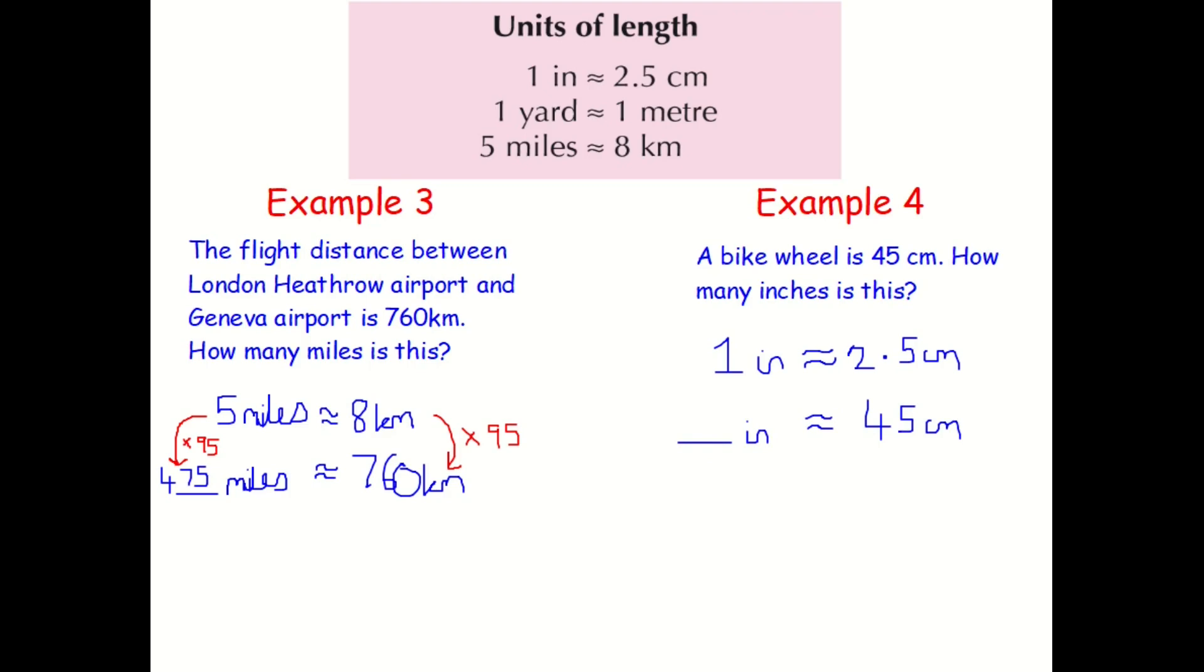So my question now becomes, how many two and a half centimetres are there in 45? Well, you can just do that by doing on your calculator, 45 divided by 2.5, which tells me that that is 18. So my multiplier there is 18. And whatever I do to one side, I must do to the other. And therefore, I get that the bike wheel is 18 inches because 1 multiplied by 18 is 18.